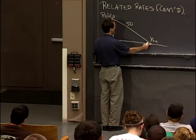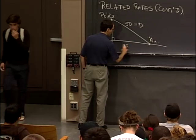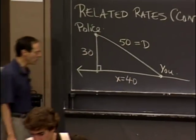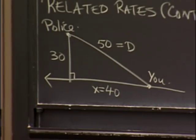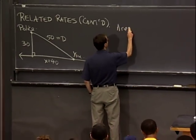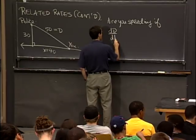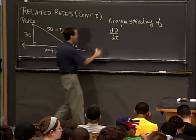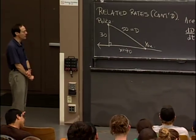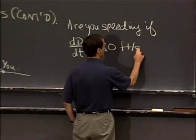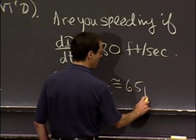Because you're moving, this distance is varying, so we gave it a letter. Similarly, your distance to the foot of the perpendicular with the road is also varying. At this instant it's 40, because this is a 3-4-5 right triangle. The question is: are you speeding if the rate of change of d with respect to t is 80 feet per second? Technically that would be minus 80, because you're going towards the policeman. So d is shrinking at a rate of minus 80 feet per second. 95 feet per second is approximately the speed limit, which is 65 miles per hour.